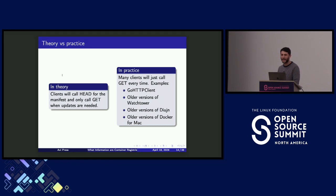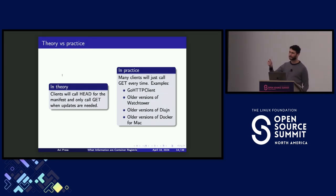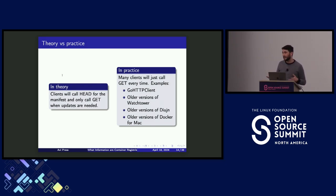In theory, clients will make that HEAD request and then do a GET when they need to. In reality it does not always work like that. Older versions of many clients just did not do this — they're going to make a GET request every time no matter what, even if nothing was downloaded and everything was up to date. In practice there are a lot of interactions with containers from things like the Go HTTP client, whether it's Helm, Kubernetes, or other software that just tries to keep dependencies up to date or do uptime checking. They may or may not respect these standards, so in practice a lot of stats are blown up in a way that is not really correct.